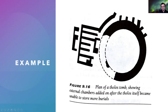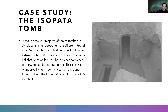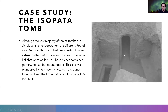Some rooms within tholos tombs are actually bricked off, meaning there is no way to get in — indicating the room is full and no more burials can be made there. The Isopata tomb near Knossos is a good example of a Minoan tholos — it is actually the exception to the rule of rough masonry, being very finely constructed and dating to the late Minoan period. It features a dromos — a hallway leading into the tomb — and two deep niches in the inner hall that were walled up and contained pottery, human bones, and debris.